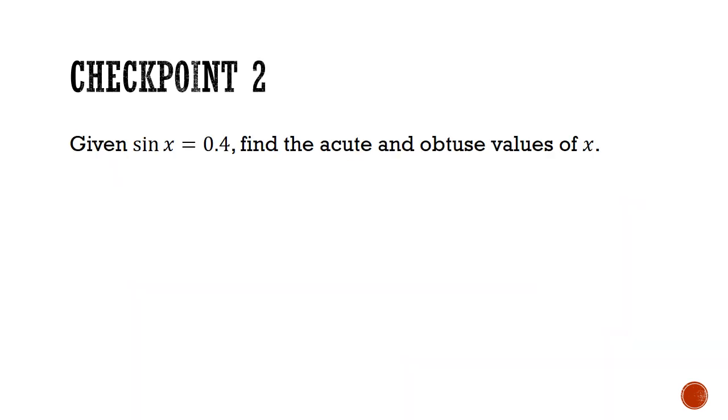Now, armed with all the formulas for obtuse angles, can you try checkpoint 2? Given that sine X is equals to 0.4, find the acute and obtuse values of X. Pause the video here and give this question a good try.